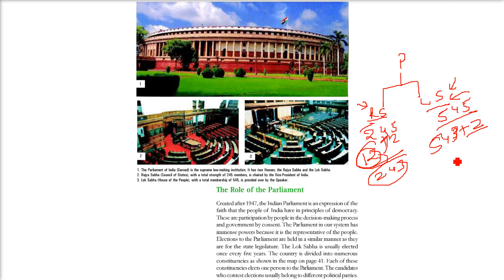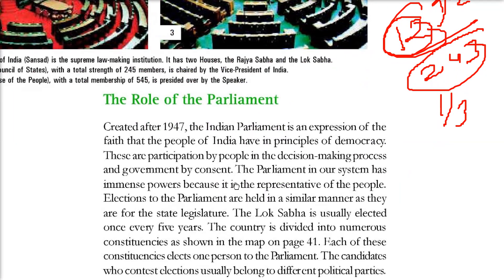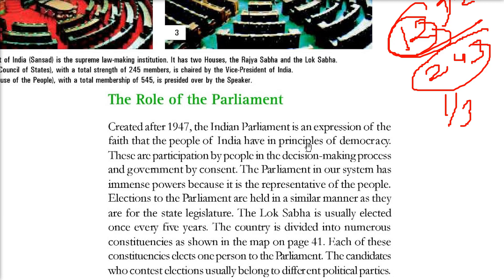The Lok Sabha members are elected for a 5-year term and the Rajya Sabha members also serve 5-year terms, but one third of the members retire every year. Because parliament was created after 1947, it is an expression of the faith of the people of India in the principle of democracy. They have participation in the decision making process of government by consent. Parliament has immense power because it is representing the people.